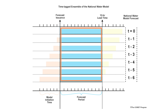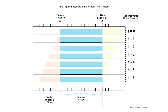The current forecast and six previous runs of the National Water Model Short Range Forecast Run are time-lagged and used to calculate the probabilities. This visualization has a 12-hour lead time, so the first 12 hours of the most recent forecast are used.